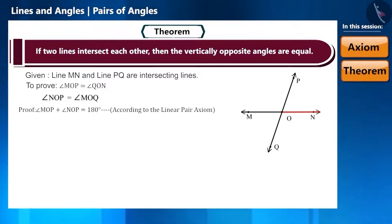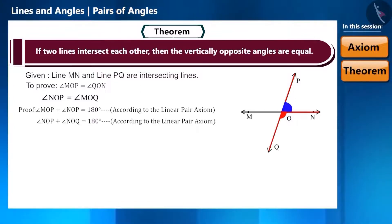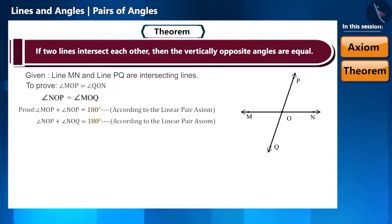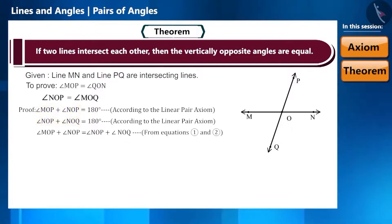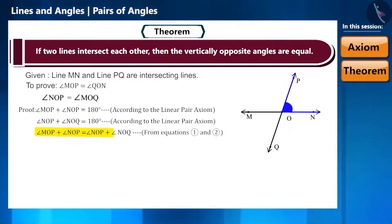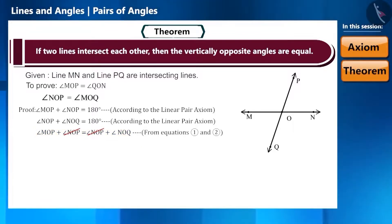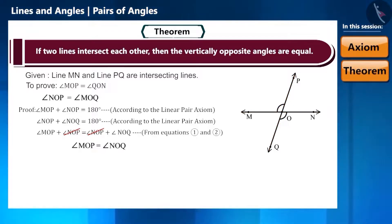Similarly, taking ON as the ray, can we say that angle NOP plus angle NOQ is equal to 180 degrees? Yes, according to the linear pair axiom. If we pay attention to both the equations, the right-hand side is equal, so the left-hand side will also be equal. That is, angle MOP plus angle NOP equals angle NOP plus angle NOQ. Since angle NOP is the same on both sides, by cancelling it from both sides, we get angle MOP equal to angle NOQ. And similarly, we can also prove angle MOQ is equal to angle NOP.